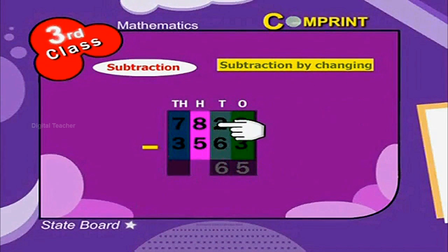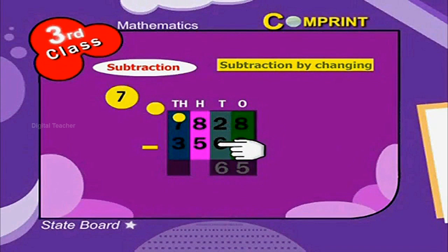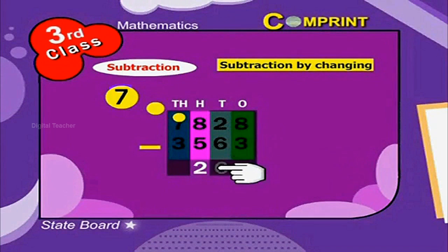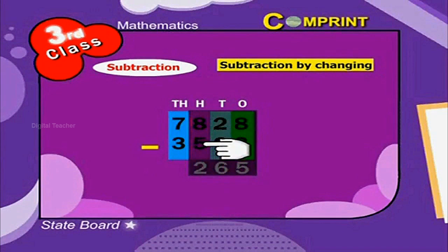Since we borrowed 100 to 10's place, now the number in 100's is 7. Now, 7 minus 5 is equal to 2. Next, 7 thousands minus 3 thousands. The answer is 4.